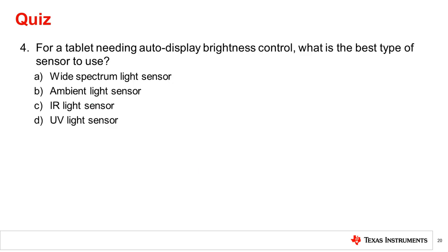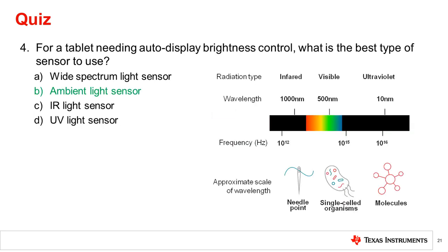Question 4: For a tablet needing auto-display brightness control, what is the best type of sensor to use? Display brightness control requires responding to changes in the visible lighting level as seen by the human eye, so a sensor that measures the visible light level is needed. Both IR and UV sensors measure different parts of the spectrum from visible light, so these will not work. For example, in a dark environment with a near-active IR night vision camera nearby, an IR sensor in a tablet would report a high light level and the display would go to full brightness. A wide-spectrum sensor will measure visible light but will also measure UV and IR radiation, giving it similar difficulties when IR or UV light sources are present. For these reasons, the best sensor to use would be an ambient light sensor.